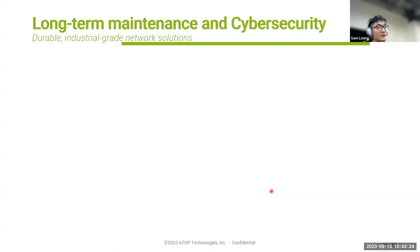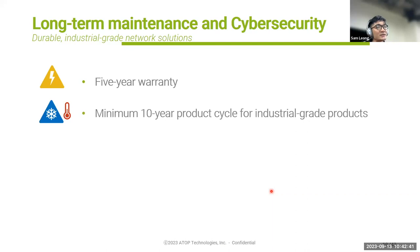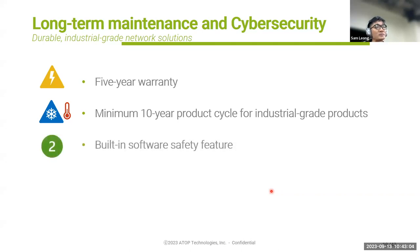In the OT — operational technology — space, maintenance and cybersecurity are other features to consider. For industrial products, ATOP offers a five-year warranty and a 10-year product cycle. Clients often ask how long a product will last and whether there will be a replacement after EOL — end of life. This is something to bear in mind when implementing a project.